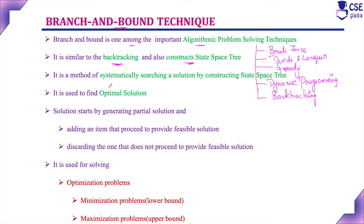The branch and bound technique is a method of systematically searching a solution by constructing the state space tree. The main aim of the branch and bound technique is to find the optimal solution always. The solution starts by generating the partial solution — that is, the state space tree construction initially starts with a partial solution.